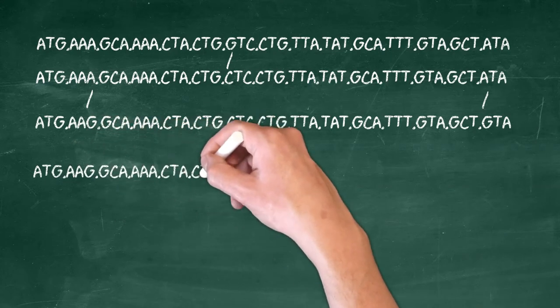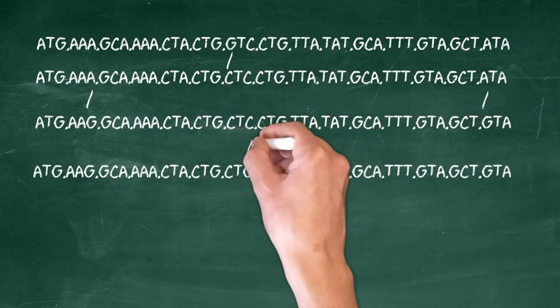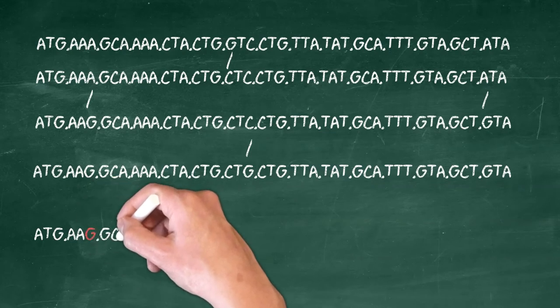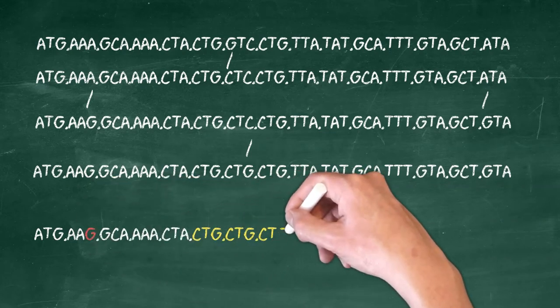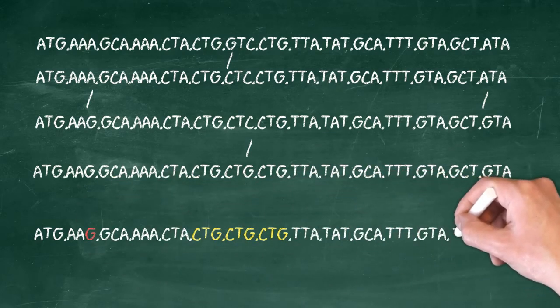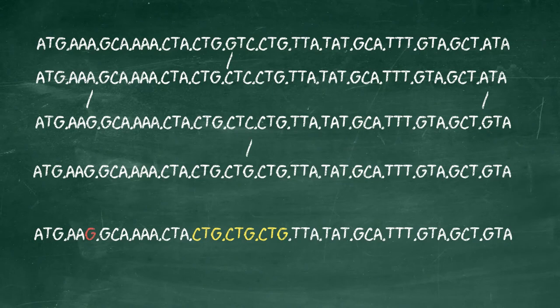Then I have a second transversion that converts C to G at position 21. There are two important things that have happened here. Firstly, at position 6, it went from G to A and then back to G, which means that if we do not have the intermediate sequence we cannot see any change there.